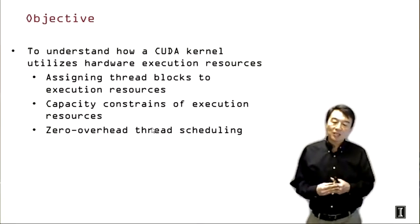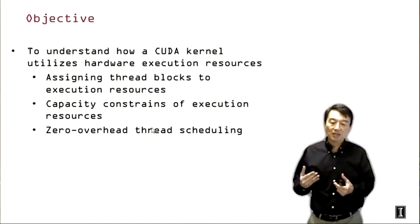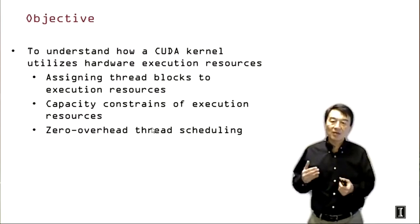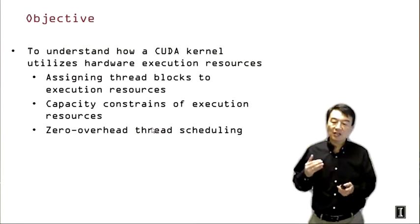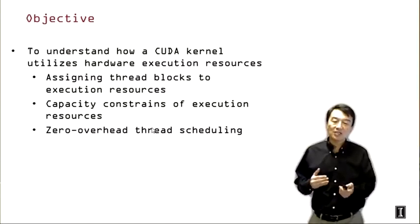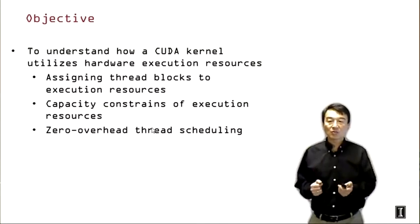We're going to first talk about assigning hardware thread blocks in CUDA to execution resources. Then we'll discuss some capacity constraints of execution resources, and finally we'll introduce the concept of zero-overhead thread scheduling for tolerating latencies and making best use of hardware resources.